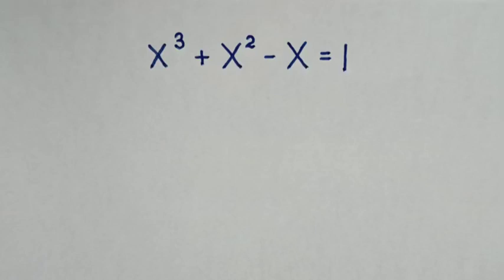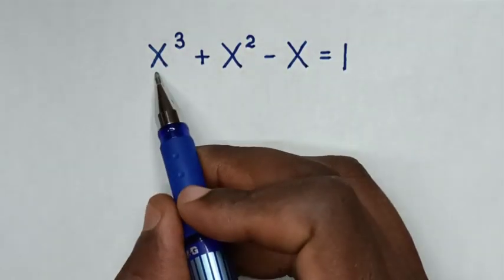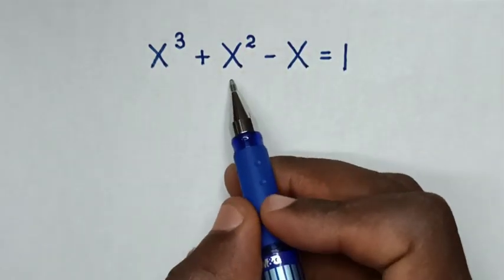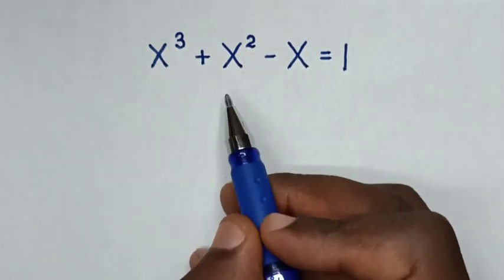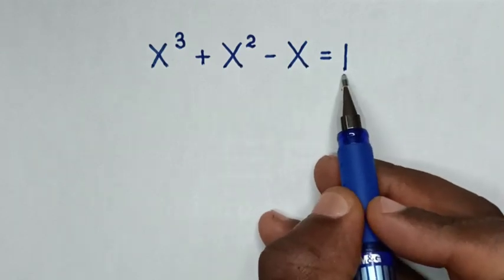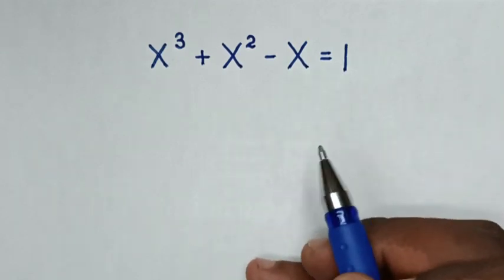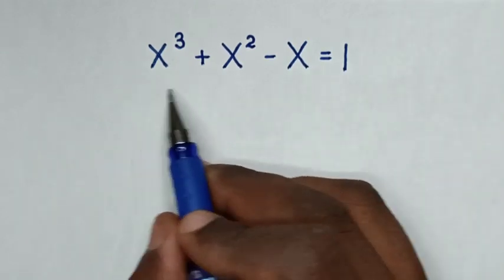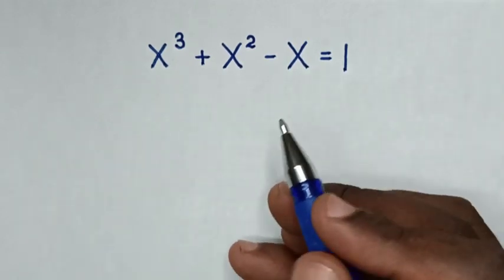Hello! How to solve x³ + x² - x = 1 to find the values of x from this equation?